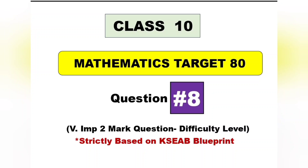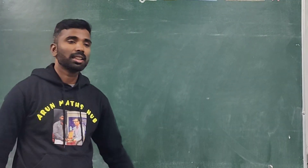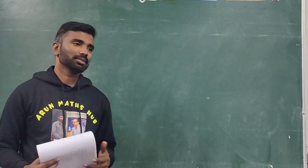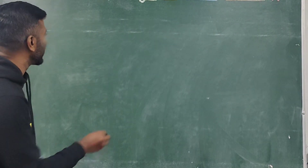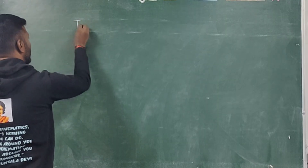Hello dear students, welcome back to my channel. In this video we'll see maths target 80, question number 8, based on trigonometric ratios — a very simple question to score two marks. Watch the complete video to understand and score two marks very easily. Do subscribe to the channel and also join my WhatsApp channel, the link is in the description.